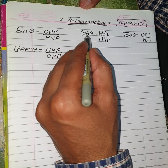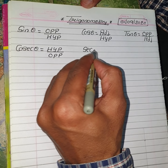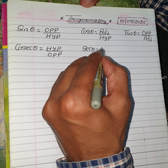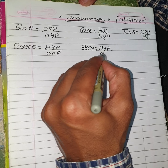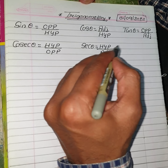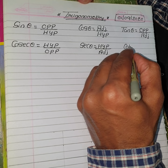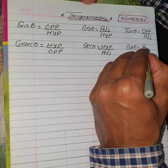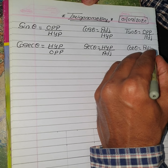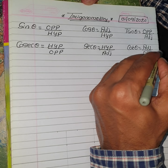The reciprocal of Cos Theta is Sec Theta, which equals Hypotenuse upon Adjacent. The reciprocal of Tan Theta is Cot Theta, which equals Adjacent upon Opposite.